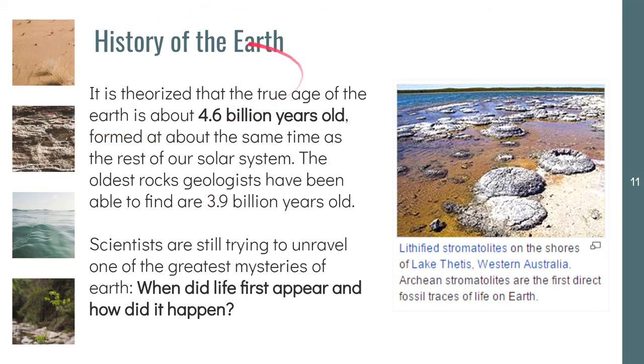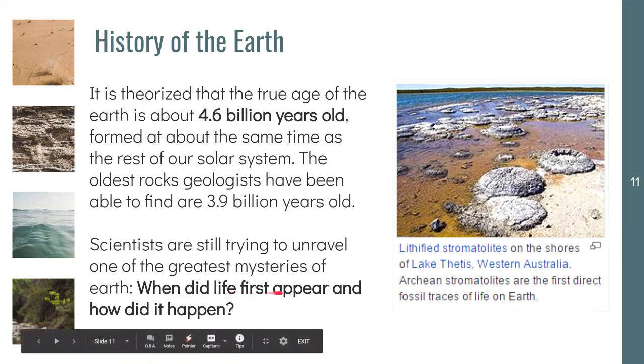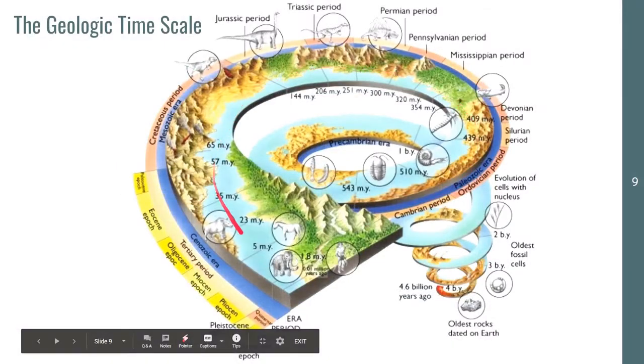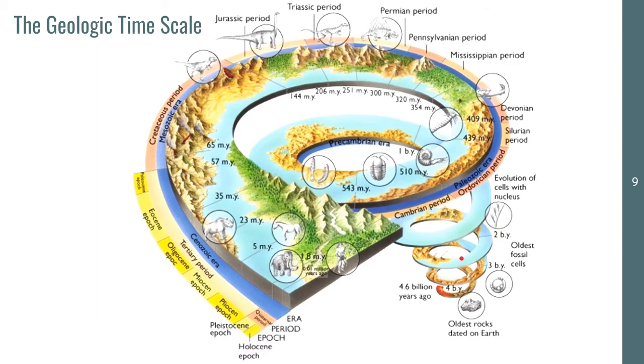Whenever we talk about the history of the Earth or the geologic timescale, the main question that scientists are still trying to answer is: when did all life first appear and how did it happen? Among all of these eons and eras, specifically when did life on Earth start? And how did it evolve into different forms and variety that we see today?